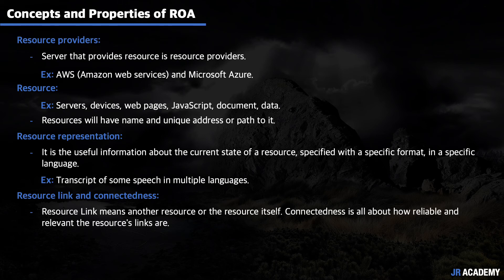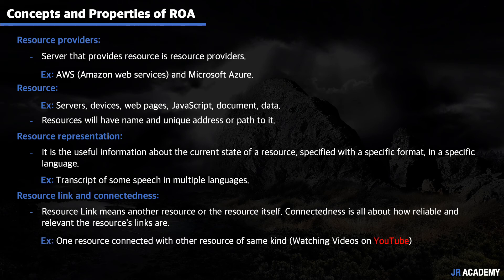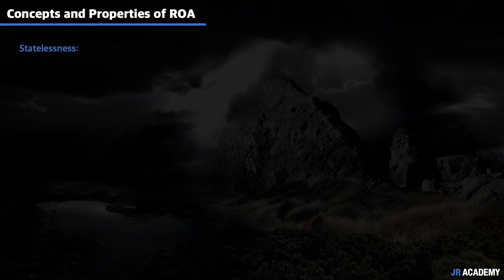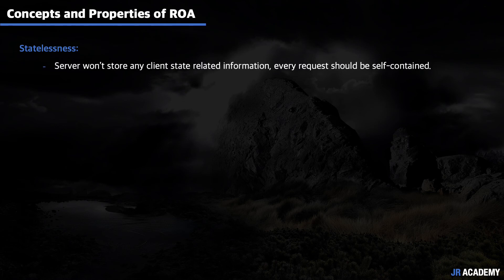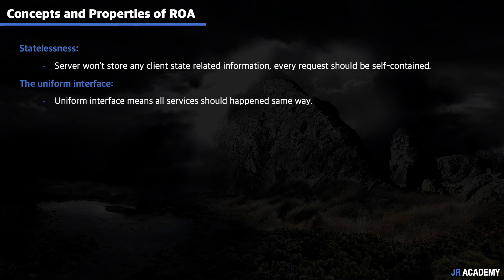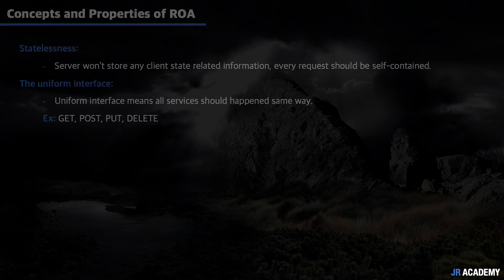A resource link represents another resource or the resource itself, and connectedness is about reliability and relevance — one resource connected with another resource of the same kind. For example, when we watch videos on YouTube, it suggests other videos of the same kind — that is resource link and connectedness. Statelessness means the server won't store any client state information; every request should be self-contained and independent, with the client responsible for providing necessary information. The uniform interface means all services happen the same way — such as GET, POST, PUT, and DELETE — interpreted the same way across the internet.